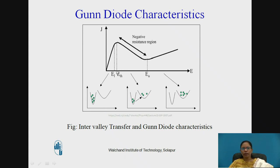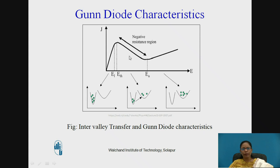We can explain this with the two-valley theory. When E is less than EL, all electrons are in the lower valley where mass is less and mobility is higher, so current is higher. When electrons start transferring to the upper valley, mass is more and mobility is less, so current starts dropping. When all electrons transfer to the upper valley, current reduces greatly and remains almost constant — this is the saturation region.